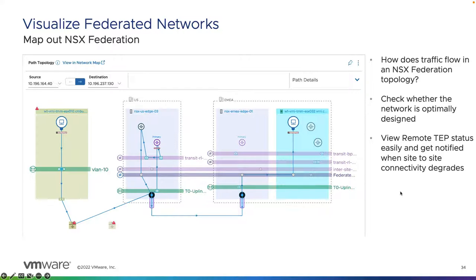We can utilize this for visibility or troubleshooting purposes. We would see indicators — similar to the red triangles — on any device, both virtual and physical, if an issue is detected. It's also nice that we can view the remote TEP statuses just by clicking on the TEP and getting notified when site connectivity degrades.